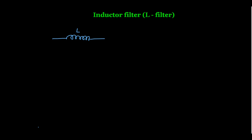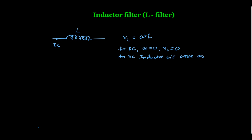If we look at this inductor, it offers some reactance, given as XL = ωL. Now if we pass a DC current — let us say the input to the inductor is a DC current — we know that for DC, the frequency is 0. So if we calculate the reactance of the inductor, it comes out to be 0. This means the inductor works as a short circuit for DC current — it will allow the DC current to pass without any resistance.